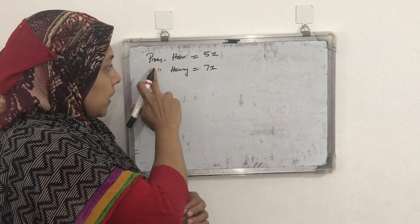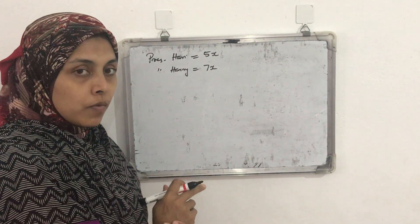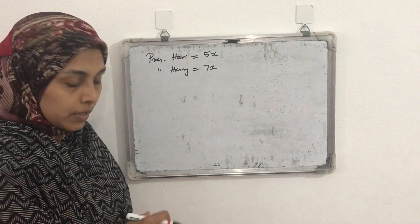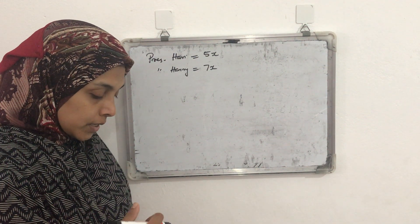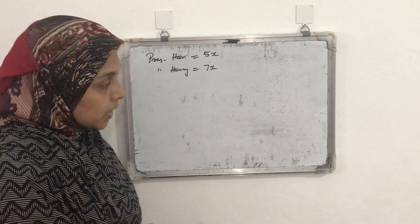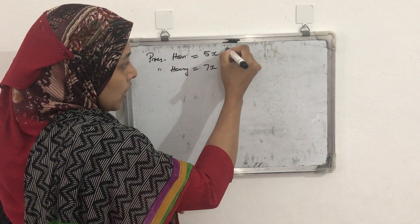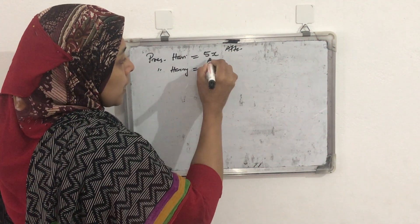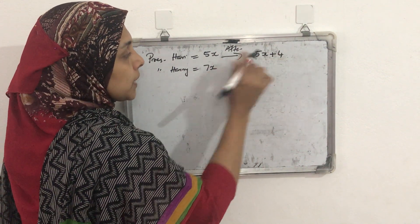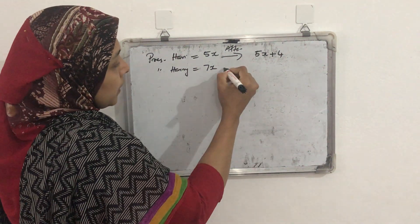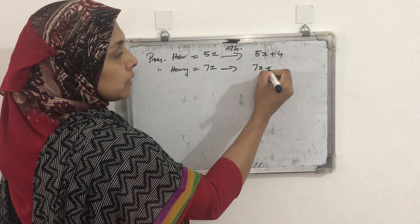So listen — present age of Hari is 5x and present age of Hari is 7x. What is given? Four years from now the ratio of their ages will be 3 is to 4. After 4 years, Hari's age will be 5x plus 4, because we are adding 4 to the present age. And after 4 years, the second Hari's age will become 7x plus 4.